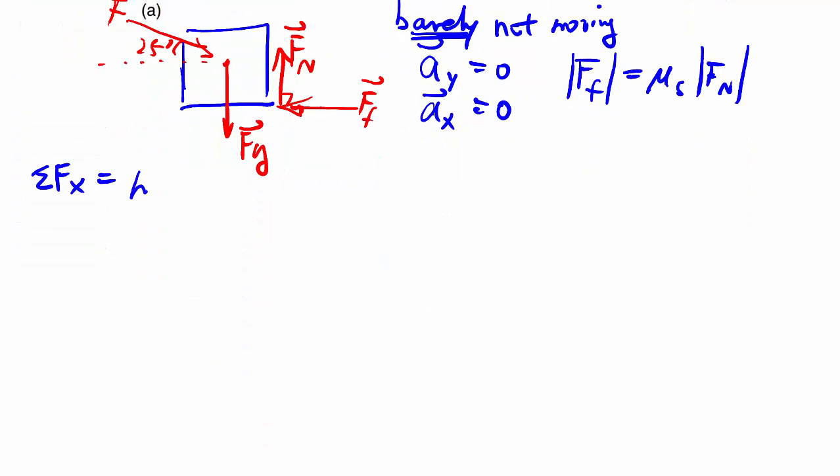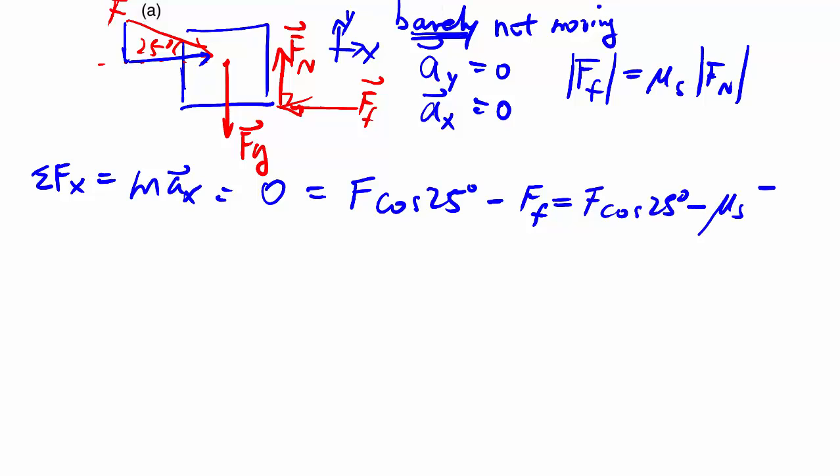Starting with the X, that's M times AX, which we know to be 0, and all the forces in that direction. Let's put the corner axes back on. We have the force over here, which gets decomposed, so the X component of that is F cosine 25, in the positive direction, as we have defined it, minus FF, because it pushes back the other way. And that's all the forces we have in the X.